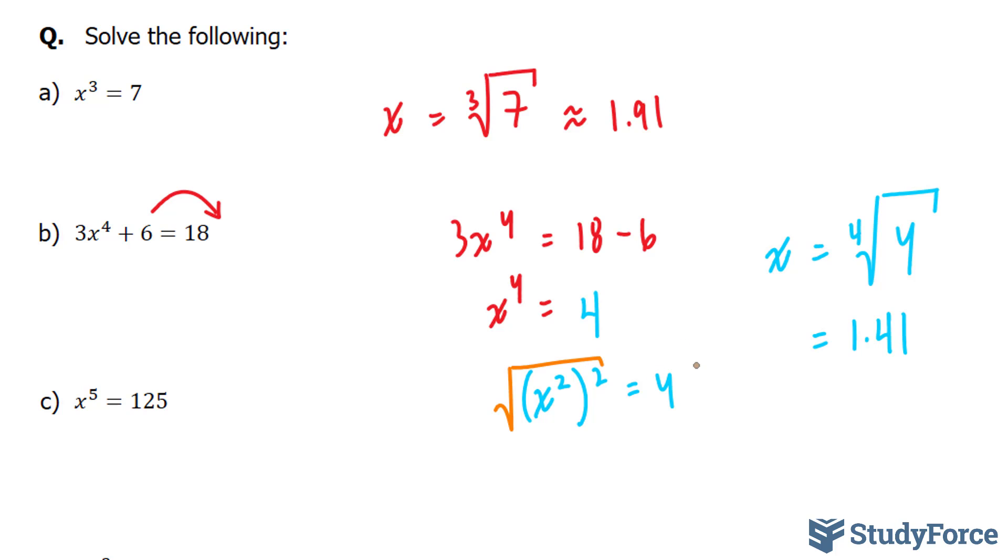And, of course, you have to do the same thing on the right side, where you would convert this 4 into 2 to the power of 2. So taking the square root of this gives us x to the power of 2 is equal to simply 2.